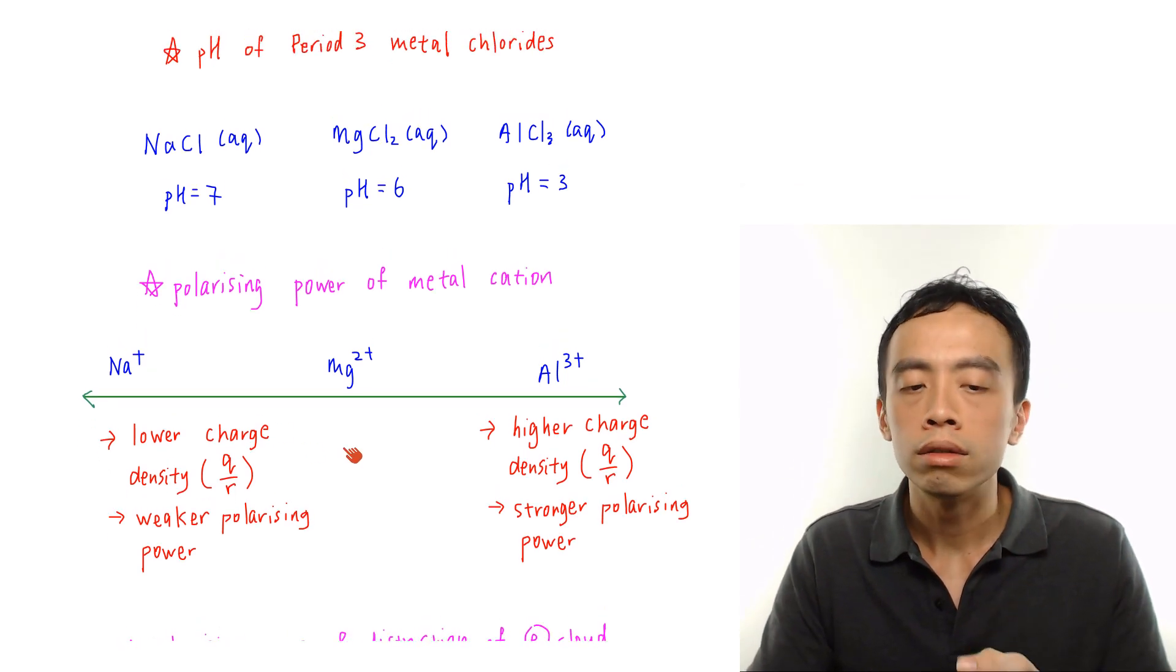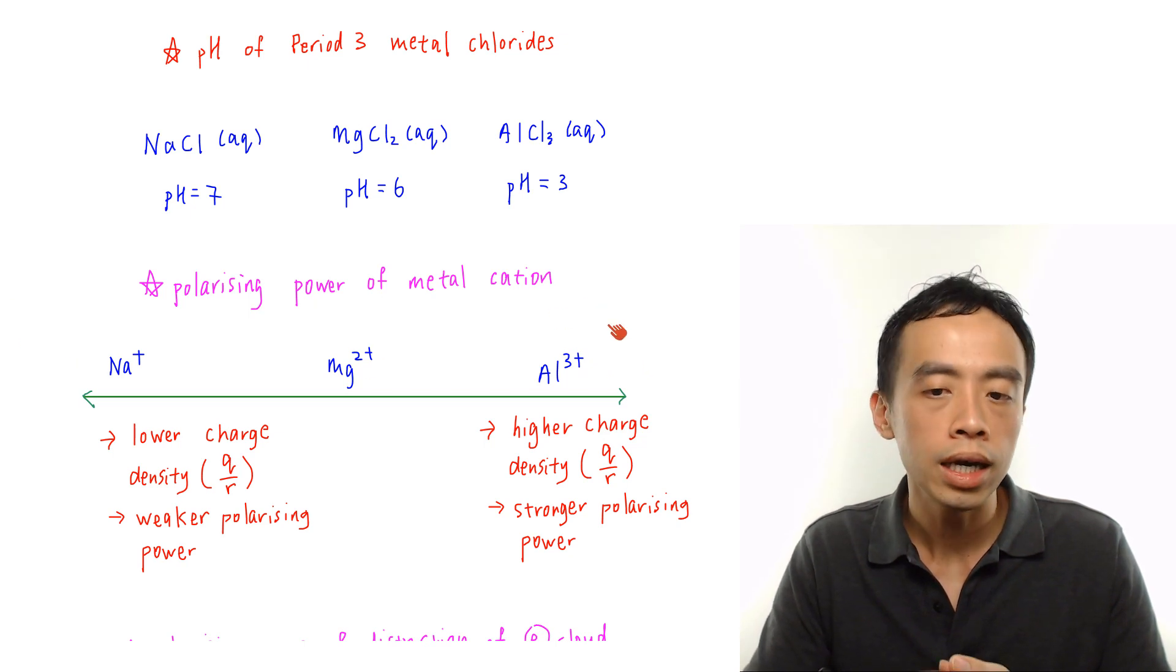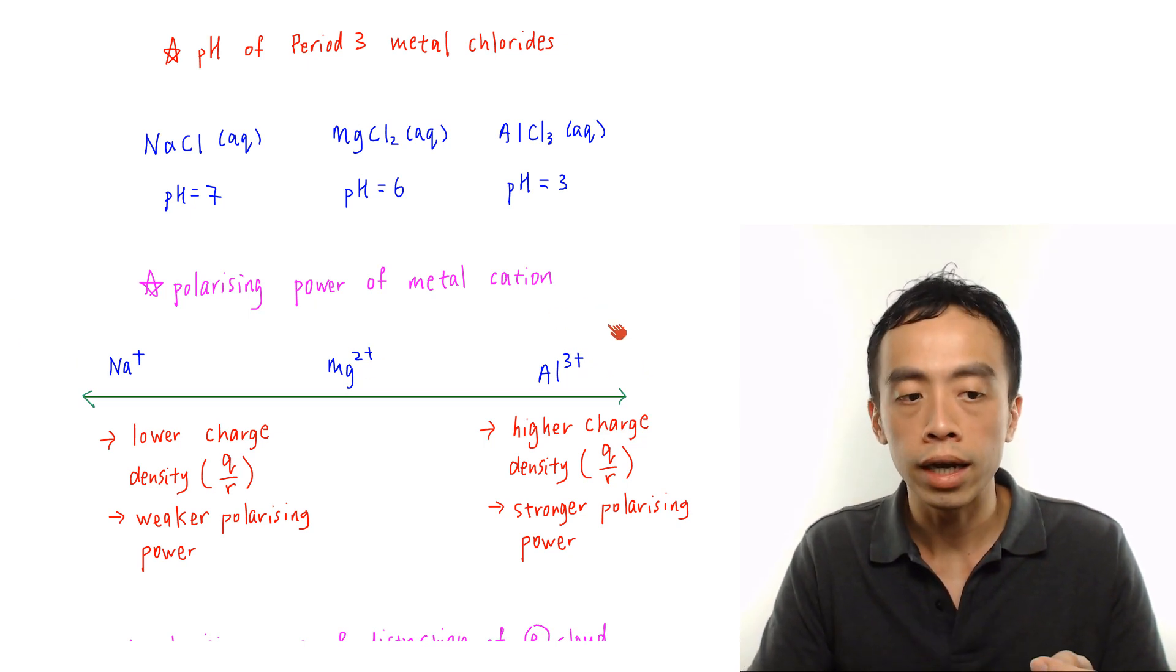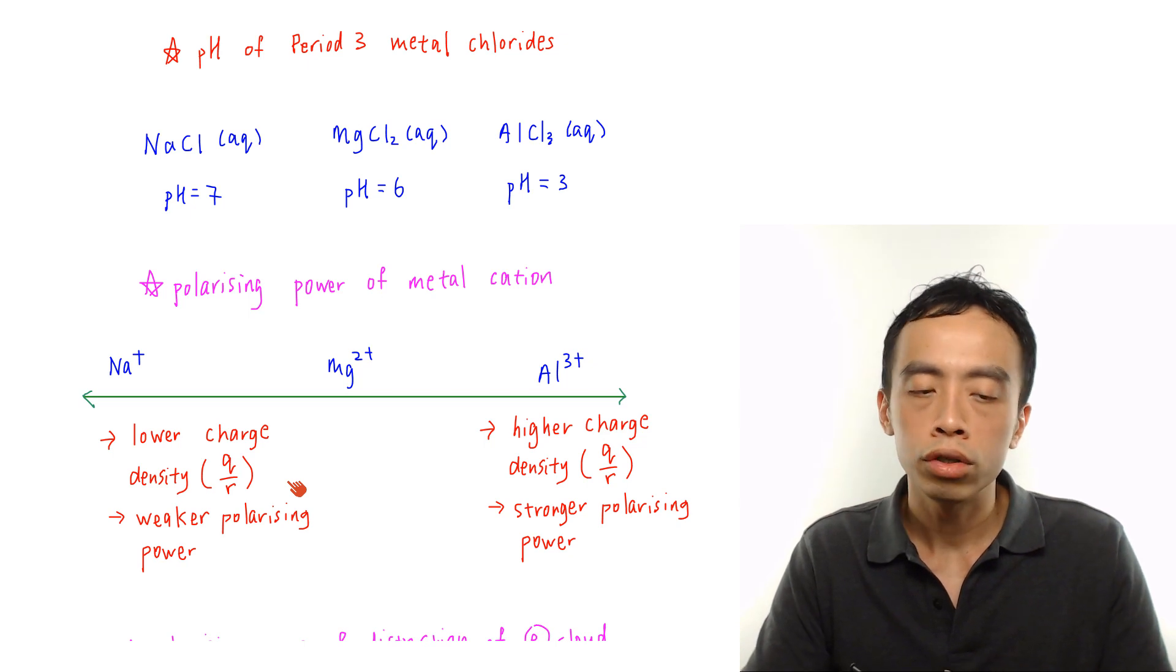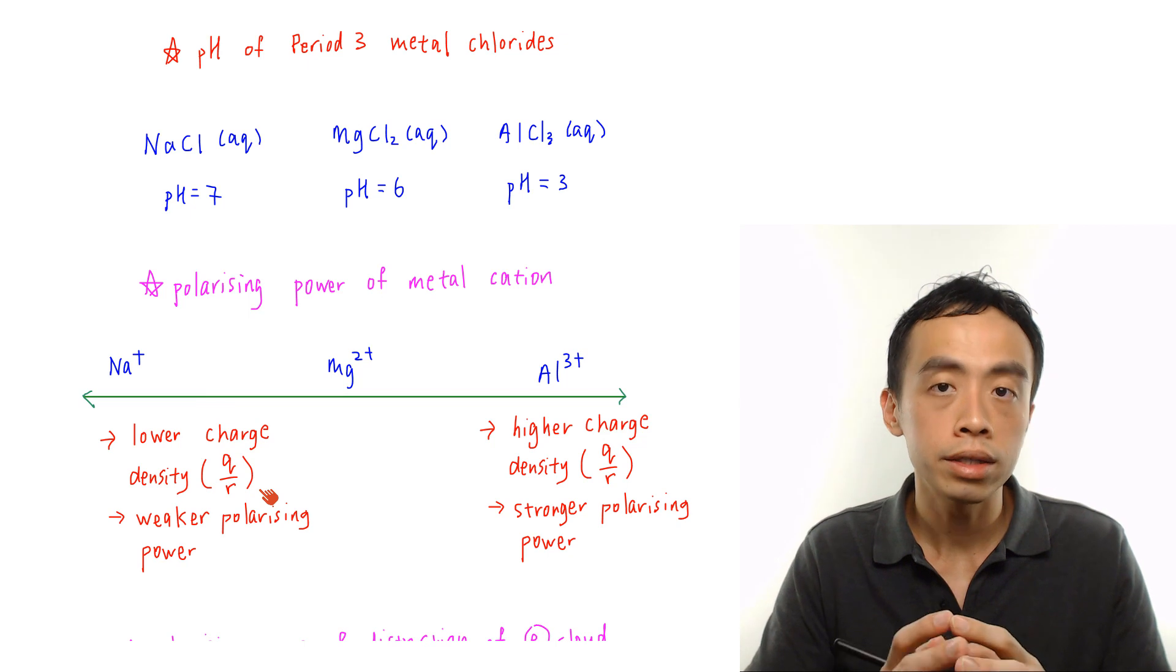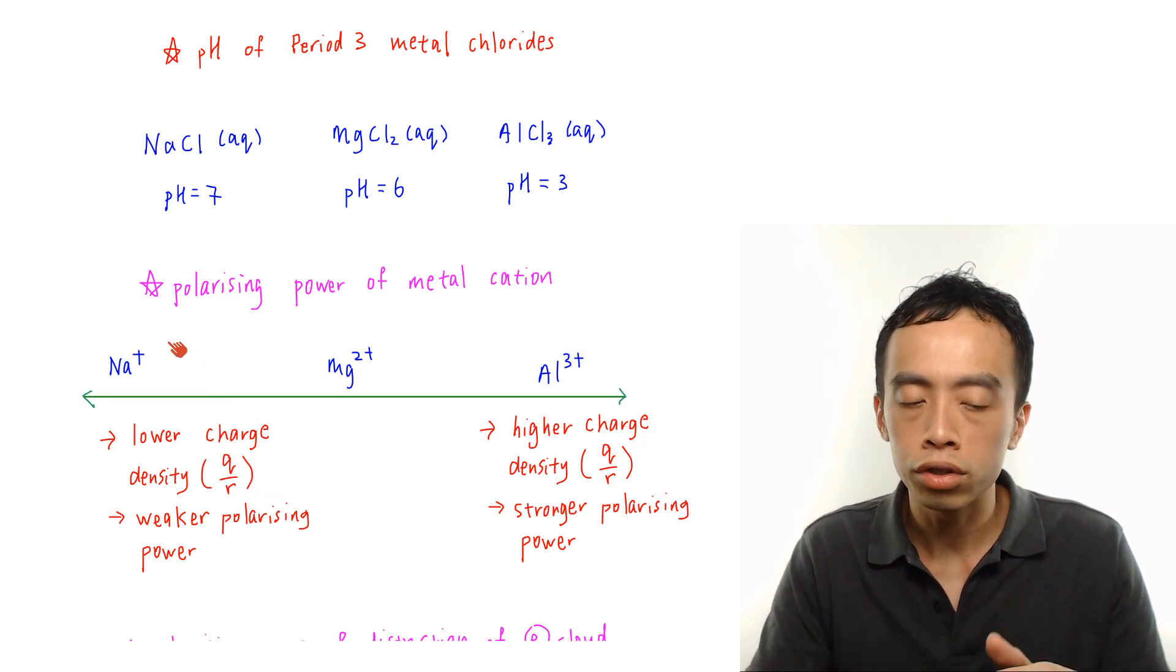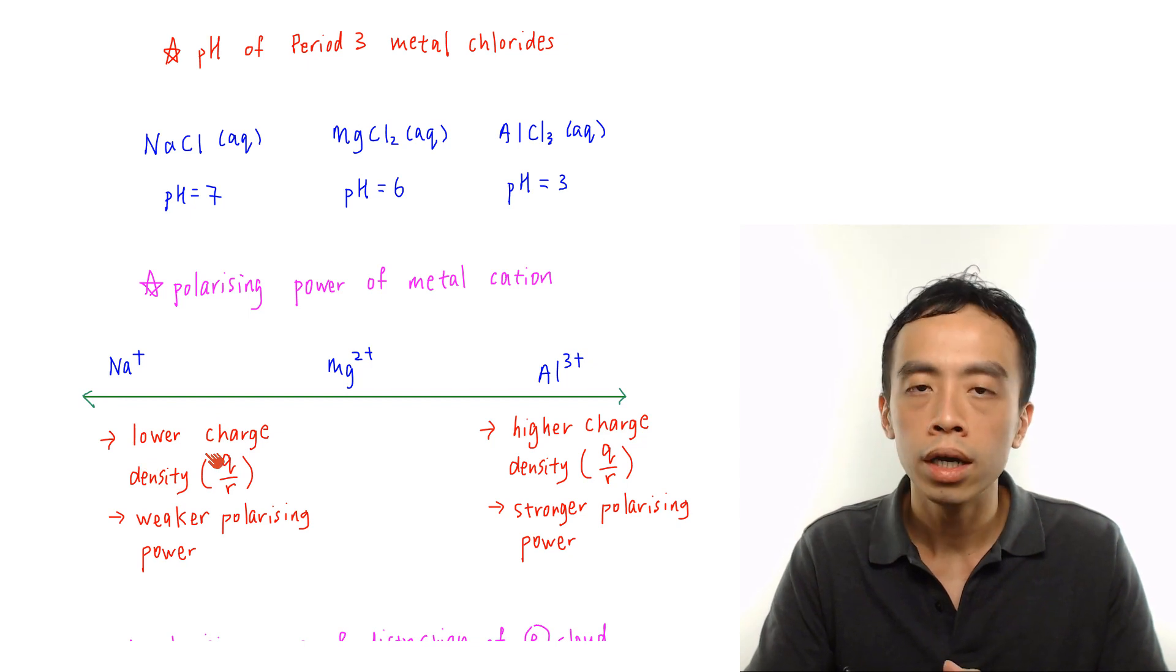Now let's look at these 3 metal cations, Na+, Mg2+, and Al3+. Now if you look at Na+, what we know for sodium cation, the charge density is lower. Charge density is just simply related to charge divided by size. So because Na+ is just a plus 1 charge, the charge density will be lower. So therefore, the polarizing power would be weaker.